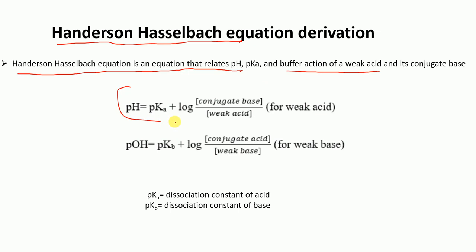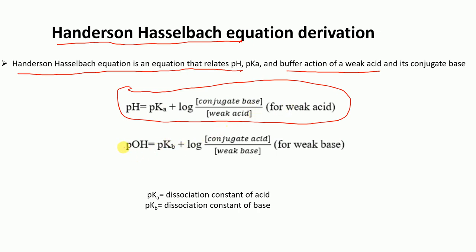This equation for a weak acid is: pH = pKa + log([conjugate base] / [weak acid]). For a weak base, it is: pOH = pKb + log([conjugate acid] / [weak base]).